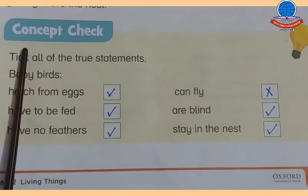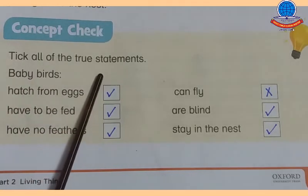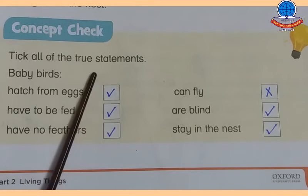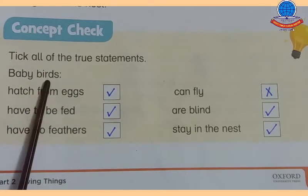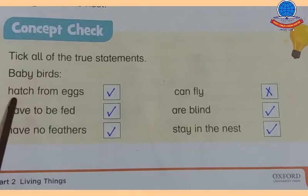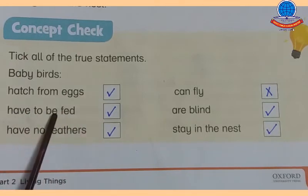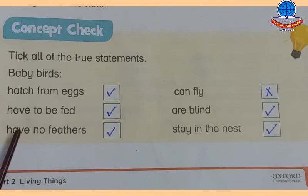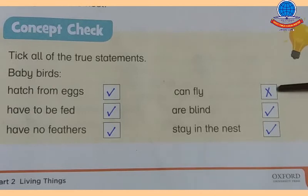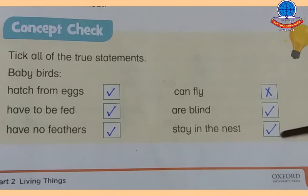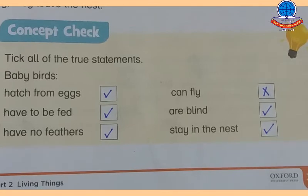Last, students: aapko concept check diya gaya hai — tick all of the true statements about baby birds. First: hatch from eggs — True. Have to be fed — True. Have no feathers — True. Can fly — False. Are blind — True. Stay in the nest — True. Yeh concept check aapka baby birds ke baare mein tha jo complete ho chuka hai.